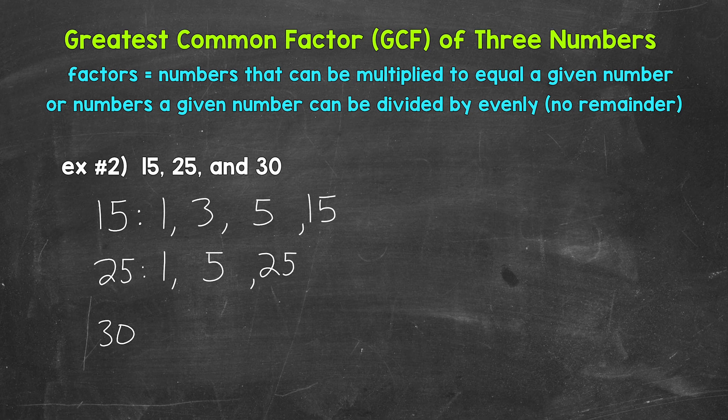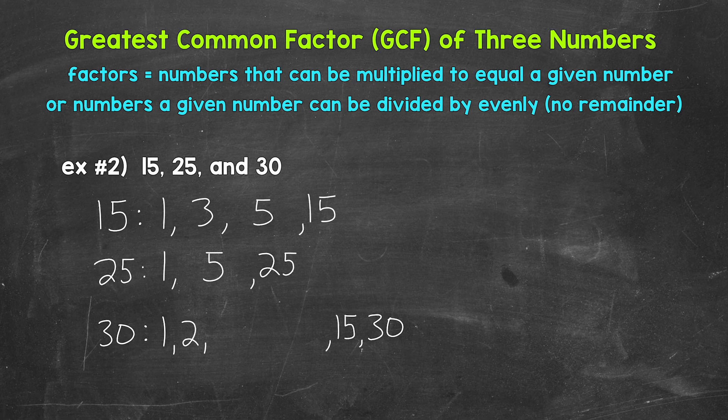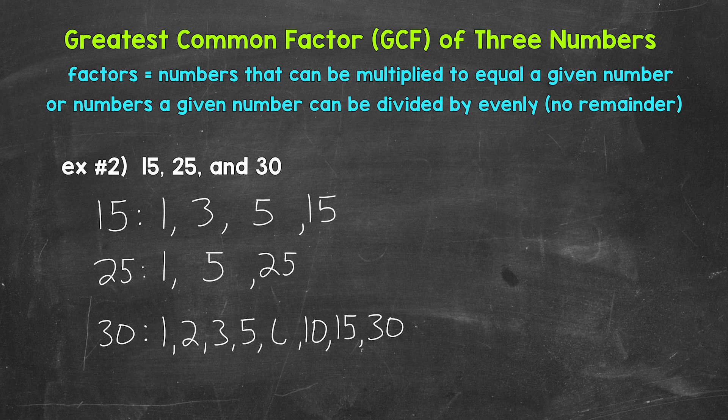And then lastly, let's move on to the factors of 30. We will start with 1 and 30. Next, we have 2 and 15. 2 times 15 equals 30. So 2 and 15 are factors. Then we have 3 and 10. 3 times 10 equals 30. So 3 and 10 are factors of 30. And then lastly, we have 5 and 6. 5 times 6 equals 30. So 5 and 6 are factors of 30. And that's it for the factors of 30.